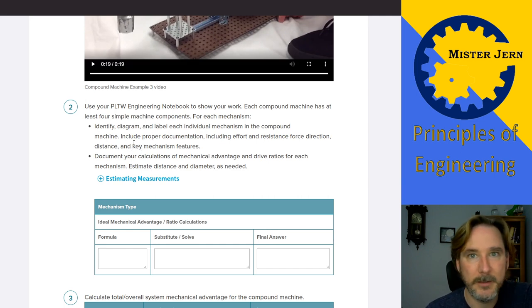And the key mechanism features. So if it is a lever, where's the fulcrum? Okay, that kind of stuff. If it's a wheel and axle, where is the wheel and the axle? Okay, all that kind of stuff. Make sure you label everything very well. Remember, this is an important grade. So you want to take your time on this.